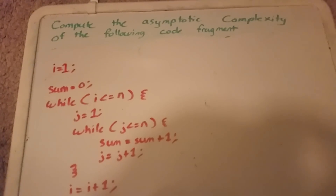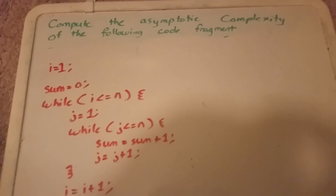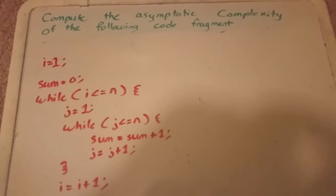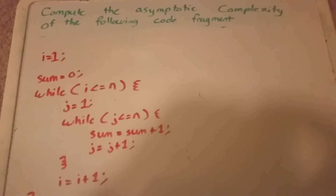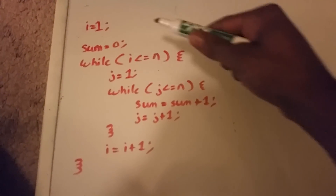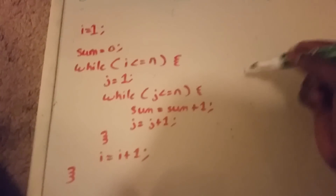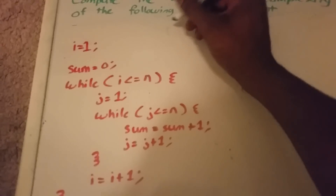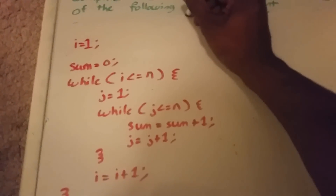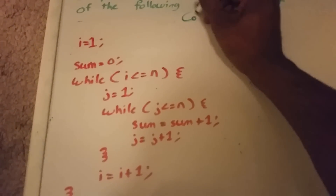Hey YouTube, this is a video on computing the asymptotic complexity of the following code fragment. There are two main things that we need to know: one is the cost of each statement,